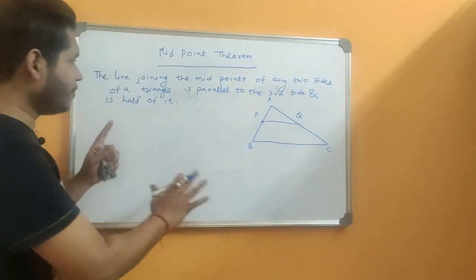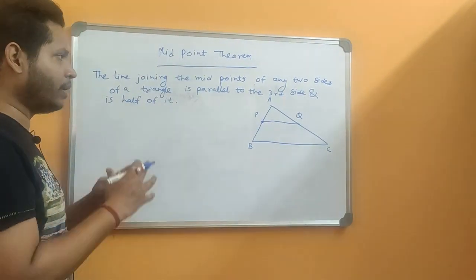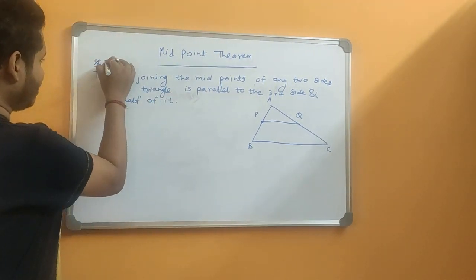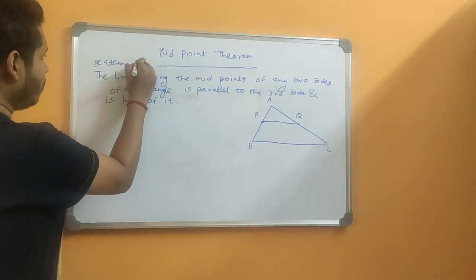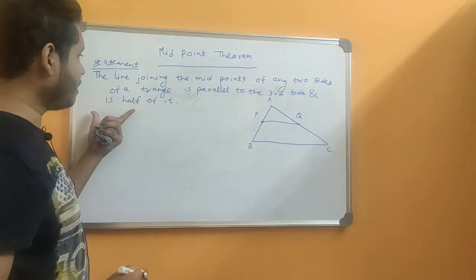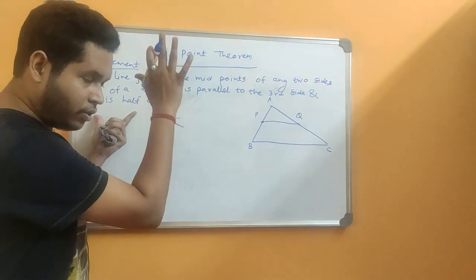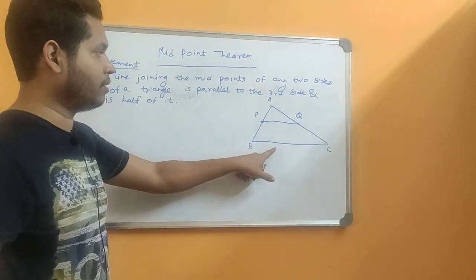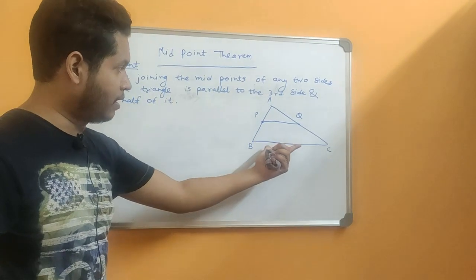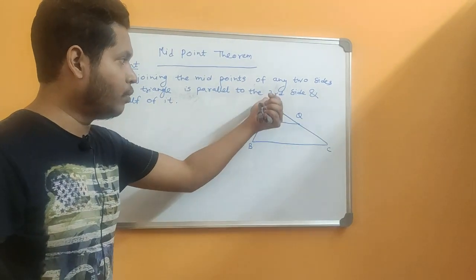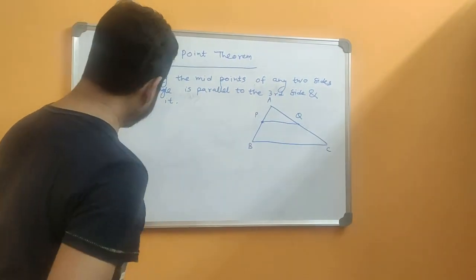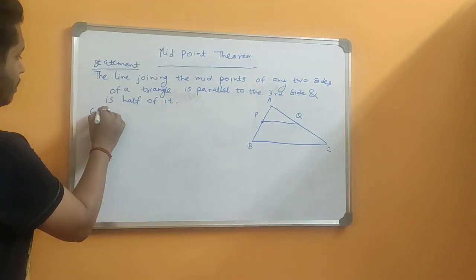Now since this is a proof, always keep in mind that whenever we are doing a proof, after writing the statement — this is basically the statement — you should always write what is given according to your figure, because in a general proof you have made the figure and named everything, so you have to write whatever you have constructed. So let's write what is given.